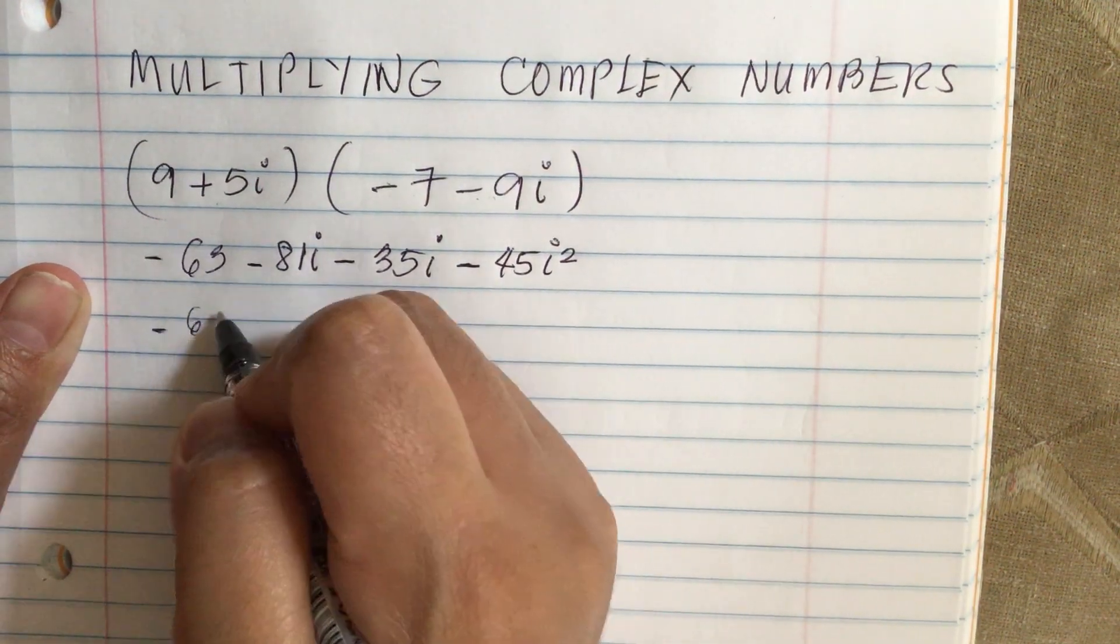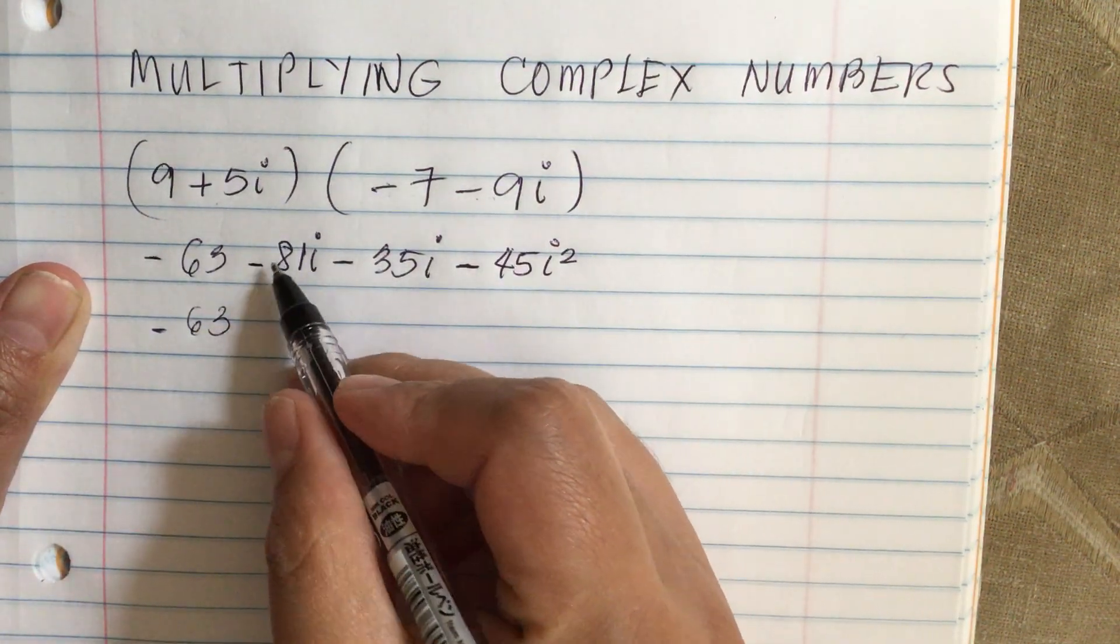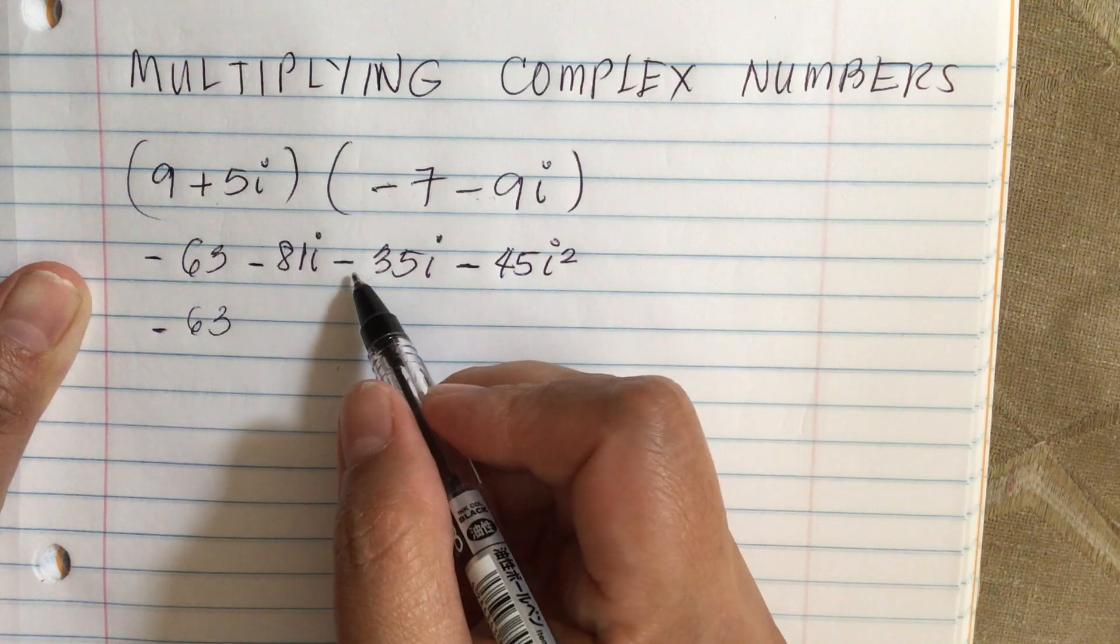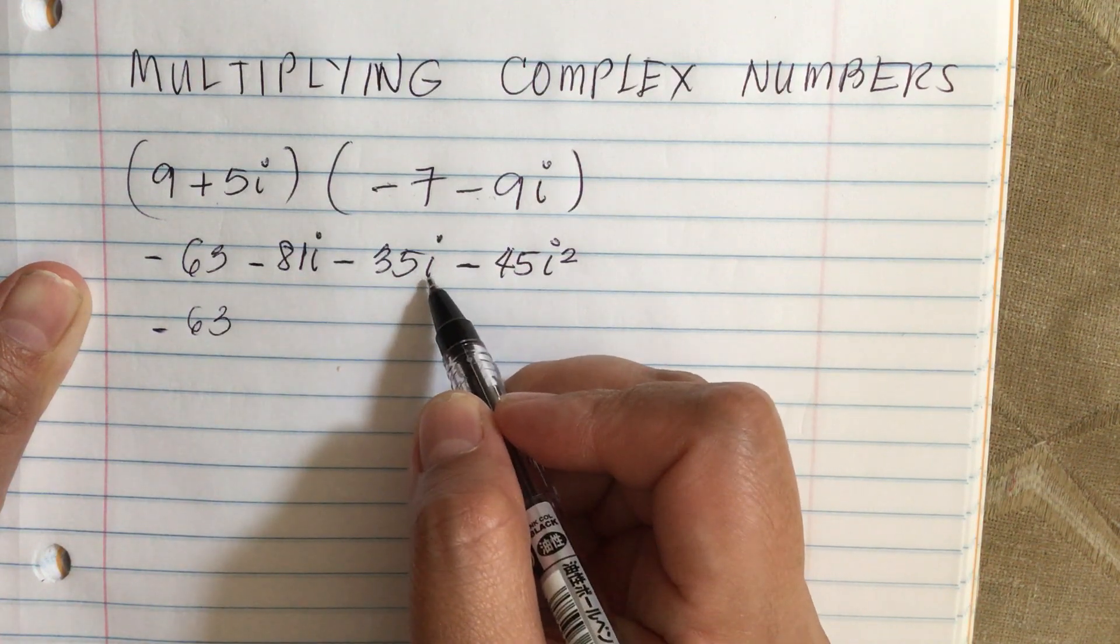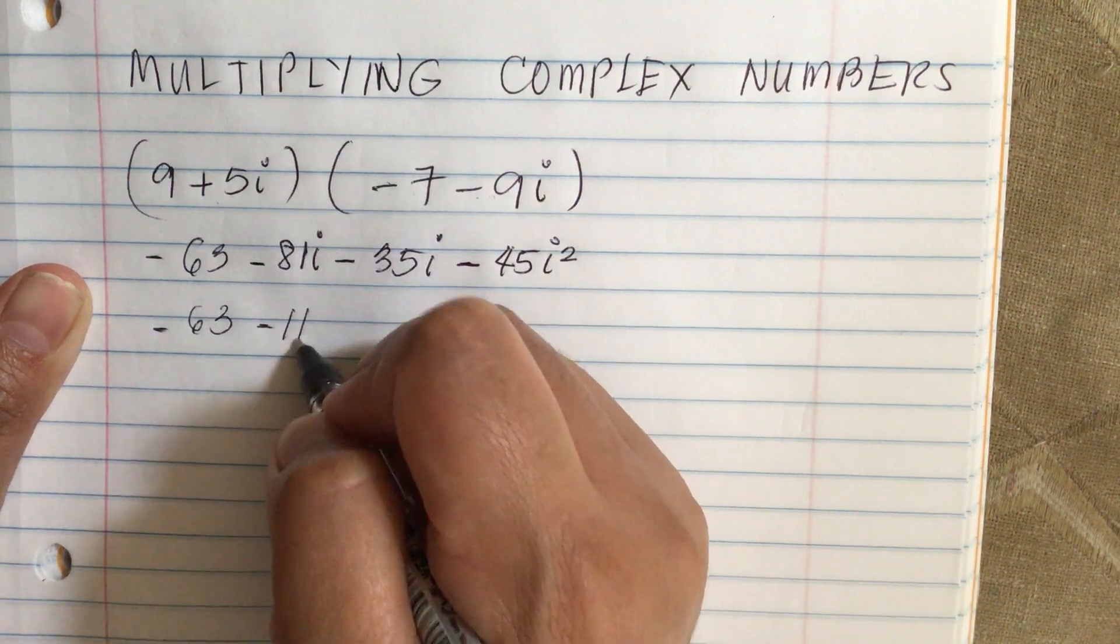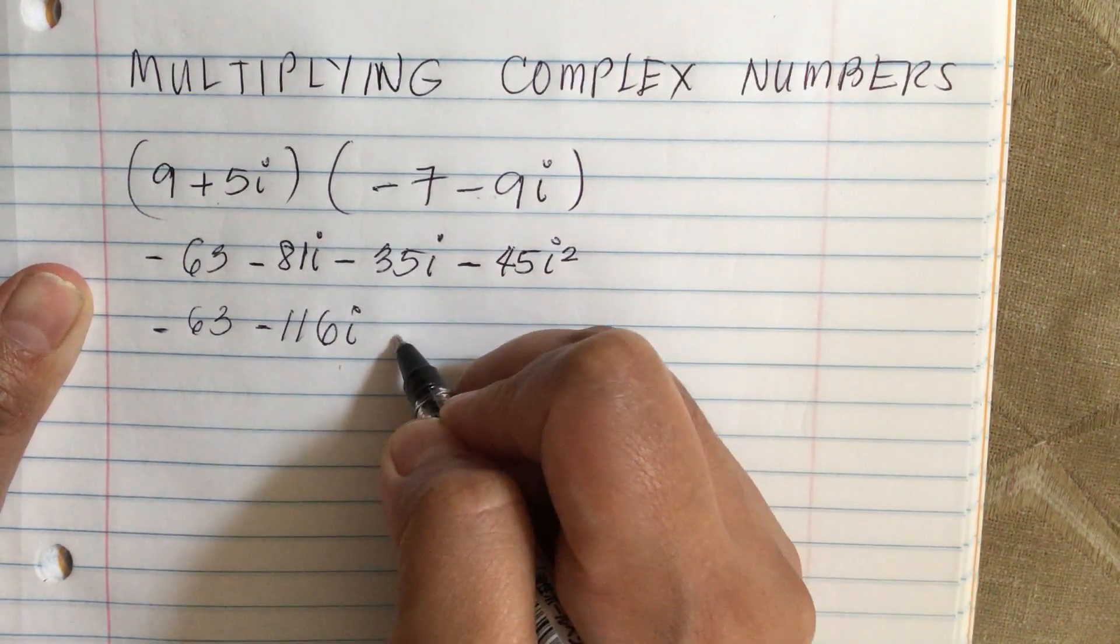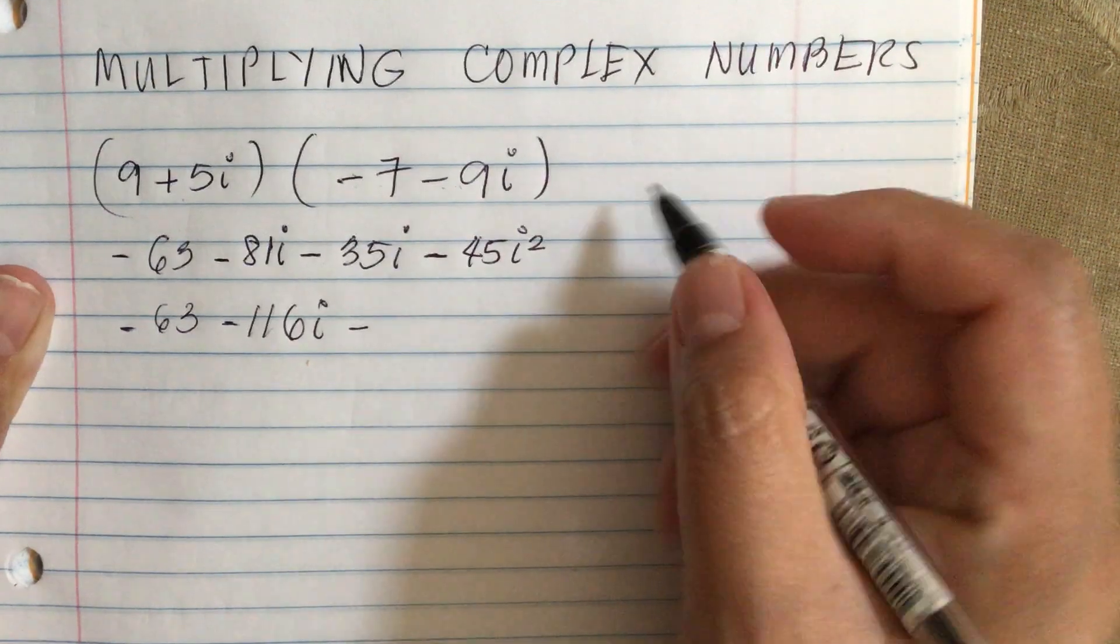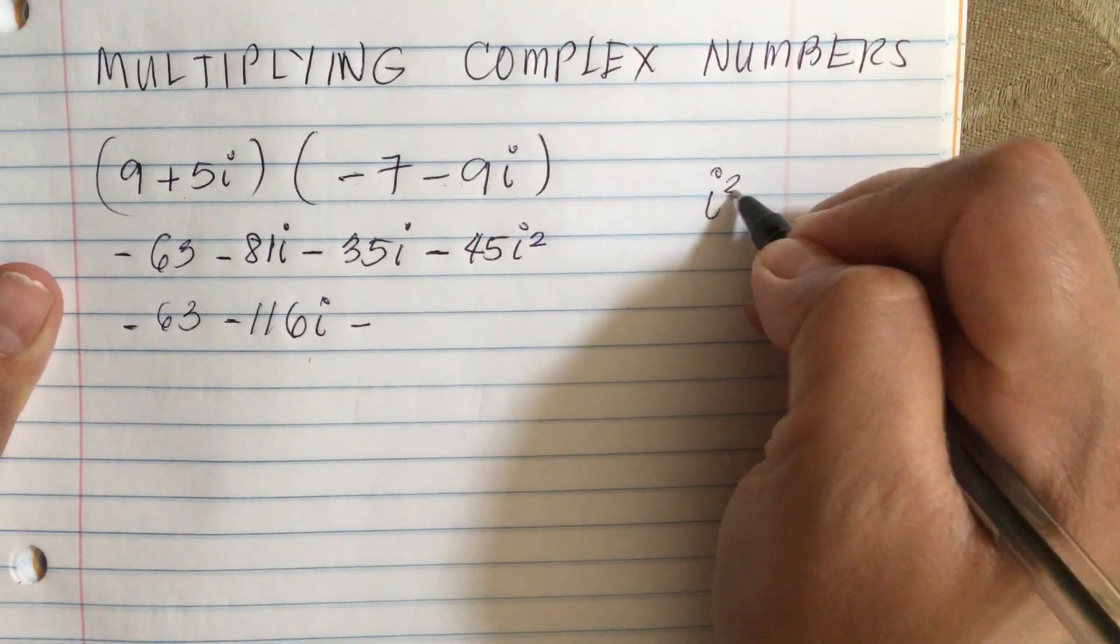So we have minus 63, minus 81i, and minus 35i is equal to minus 116i. Now, by definition, i squared is equal to minus 1.